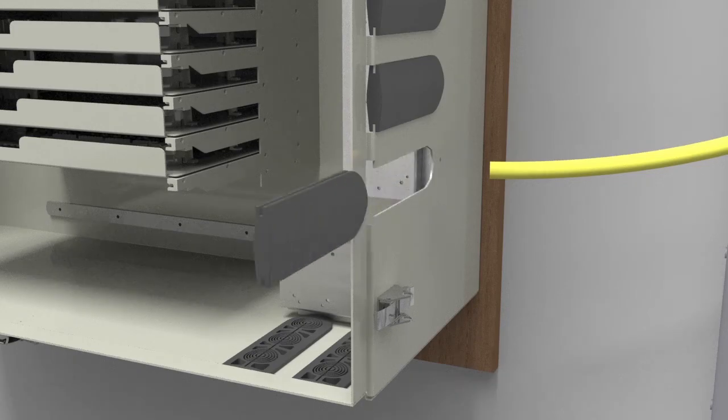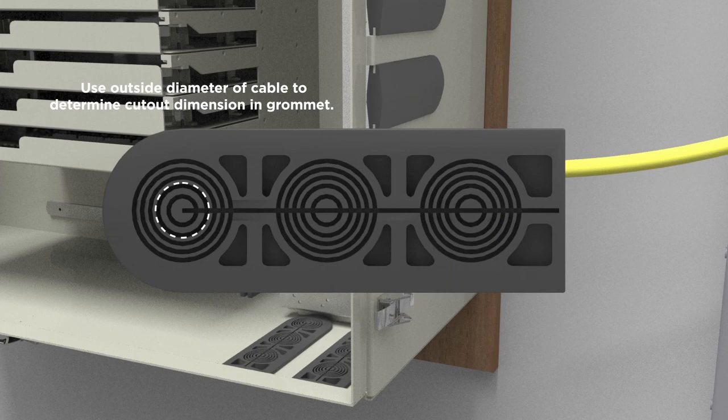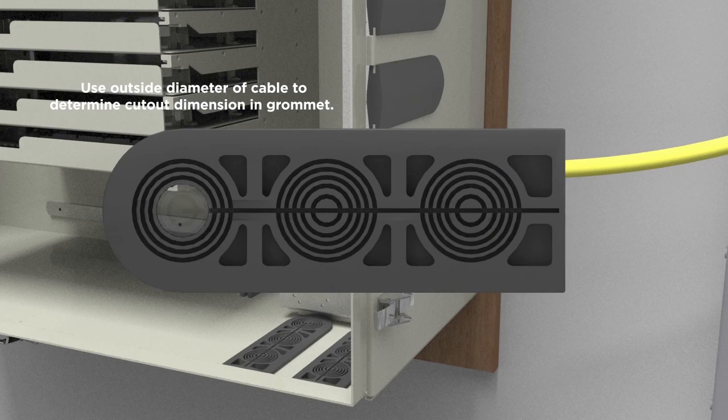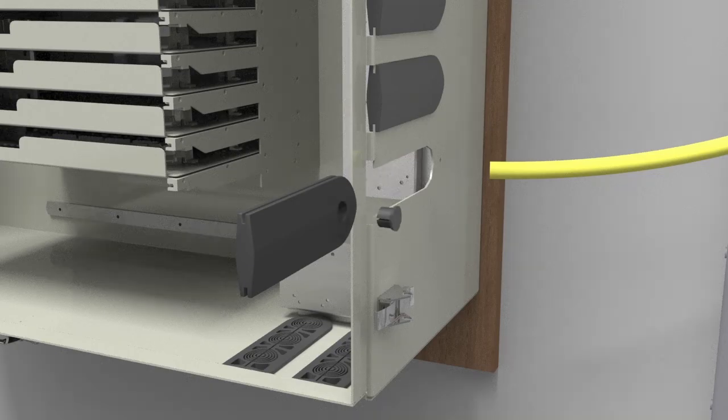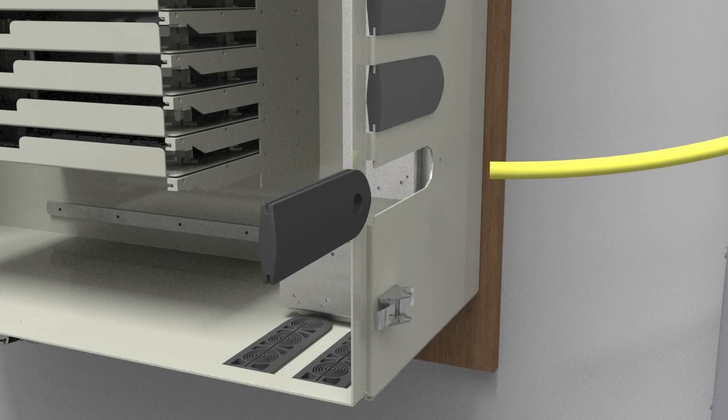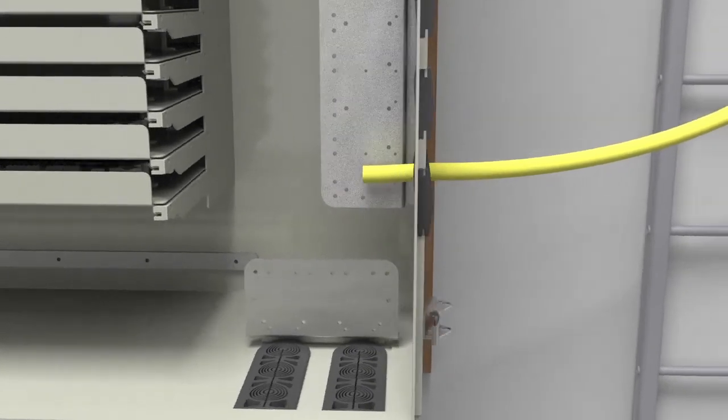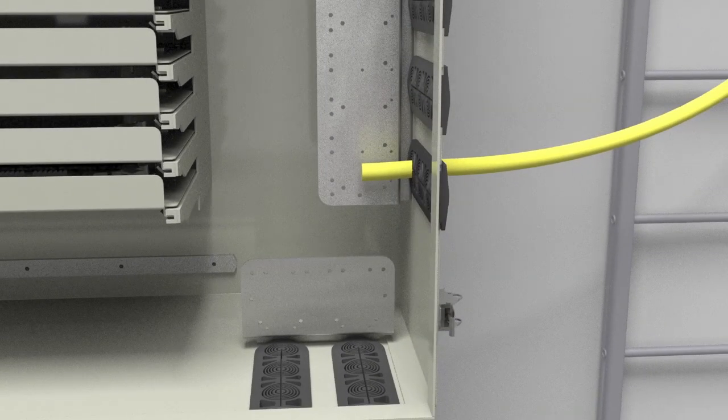Slide out the grommet. Use the proper tool to remove the cutout in the grommet that matches the outside diameter of the cable. Slide the grommet back into place and feed the IFC cable through the cutout and the grommet.